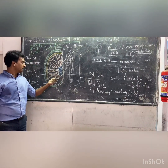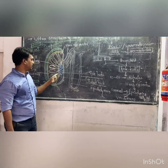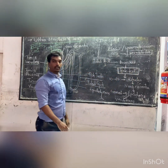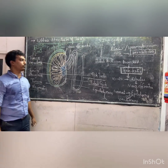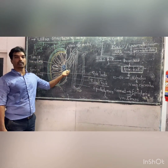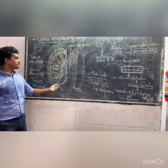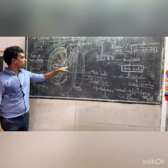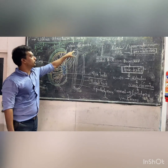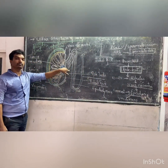The tubuli recti enter the mediastinum region, where they undergo branching to form a structure called the rete testis. The rete testis is connected to 10 to 20 ductules called vasa efferentia, which arise from the mediastinum region and carry the sperms into a coiled structure called the epididymis.